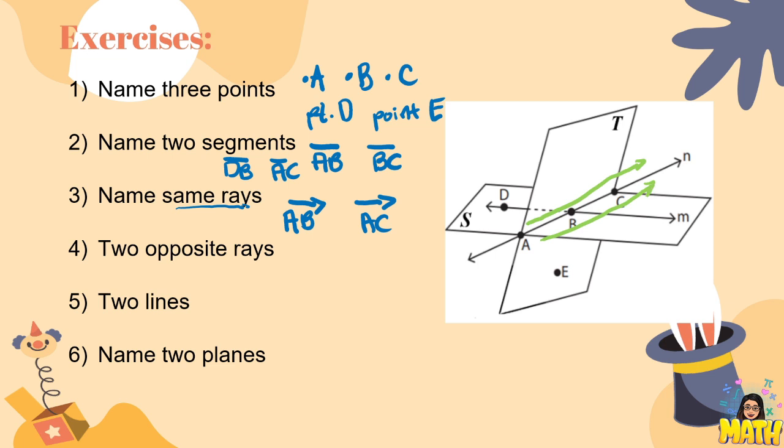Next, let's name two opposite rays. We can have ray BA and ray BC. Ray BA is going to this direction while ray BC is going to this direction.